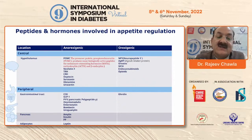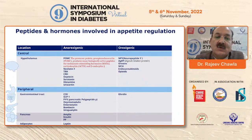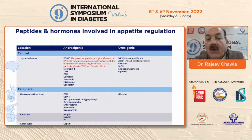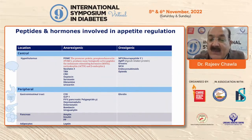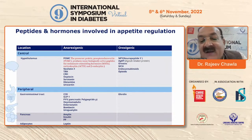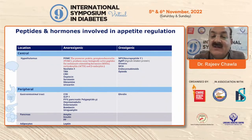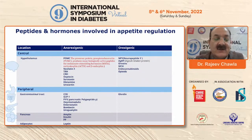Serotonin plays a huge role as an anorexigenic hormone, and histamine also. When it comes to orexigenic hormones impacting the hypothalamus, it is principally neuropeptide Y or agouti-related protein, which are very important. Endocannabinoids are also very important — you may recall the endocannabinoid inhibitor rimonabant, which was withdrawn because of psychiatric side effects and higher rates of suicide, but it was a good drug in that weight loss was possible on it.